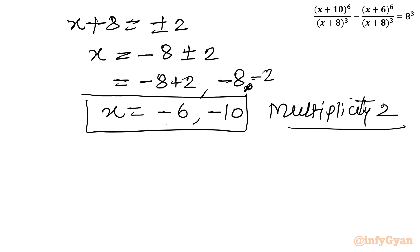So the overall answer is x = minus 6 and x = minus 10 with multiplicity 2. I hope you like this video. Thank you so much for watching friends. Do not forget to like, share, subscribe. Bye-bye till next video. Good luck.